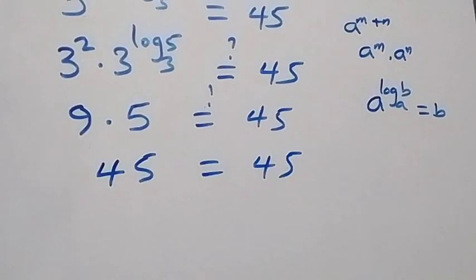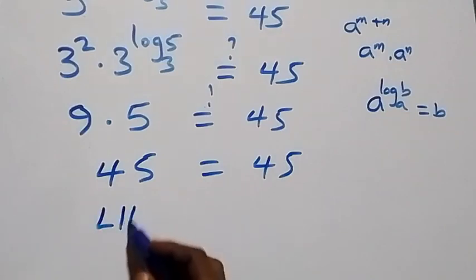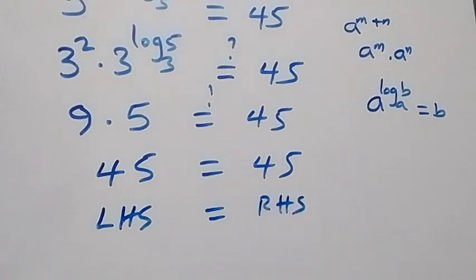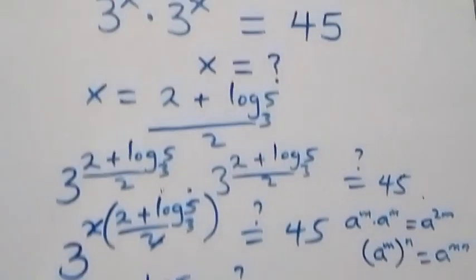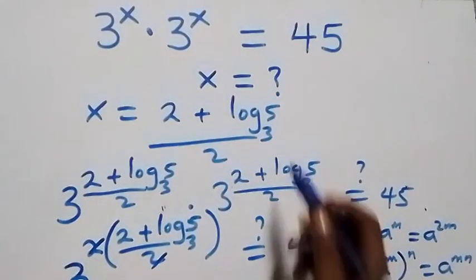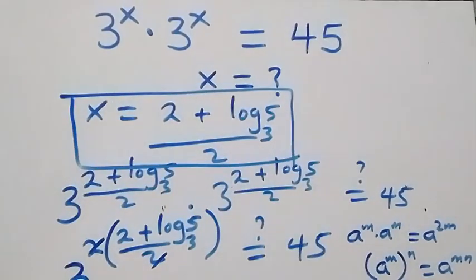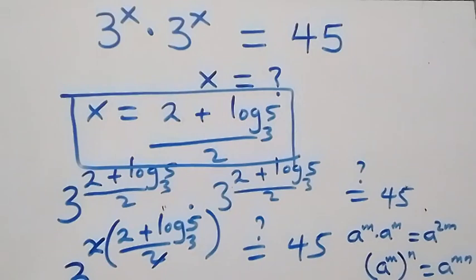Hence the left-hand side equals the right-hand side. Hence from here we can conclude that x equals two plus log five base three, all over two, satisfies this given problem. Thank you for watching here at Master Team at Class. Don't forget to subscribe for more videos, turn the notification bell, share this video, give a thumbs up, and put your comment. See you next class, bye for now.